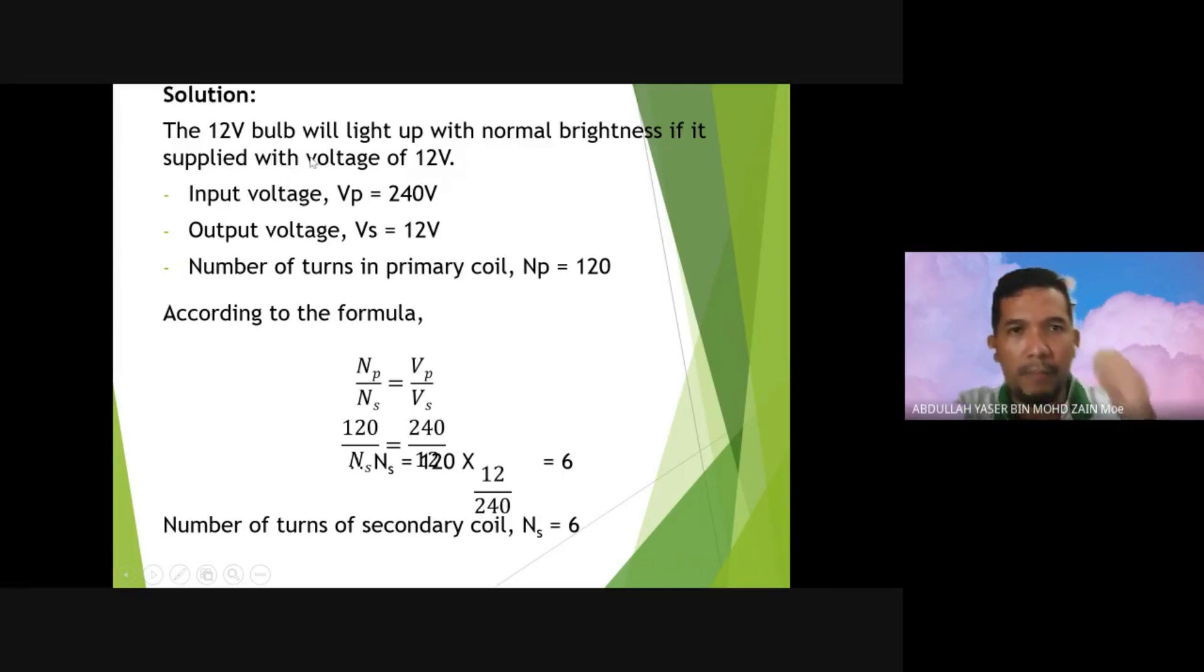The 12-volt bulb will light up with normal brightness if it's supplied with a voltage of 12 volts. The input is VP 240 volts. Output voltage is 12 volts. The number of turns is NP. According to the formula, using this formula, NP per NS equals VP per VS. Using the formula, 120, we put the formula here.